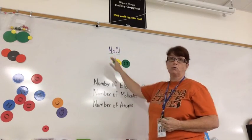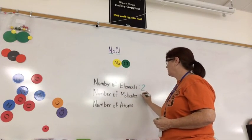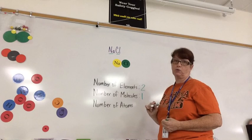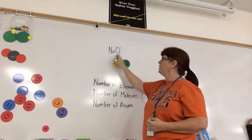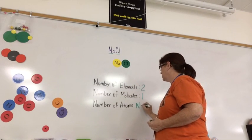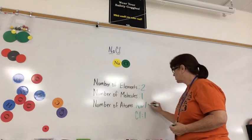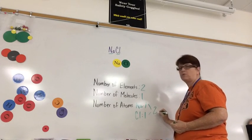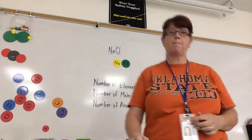How many molecules do we have? Remember, there's no number here, so it's implied that it's one molecule. And how many atoms? We have 1 and 1. Na, we have 1. Cl, we have 1. So we have a total of 2.